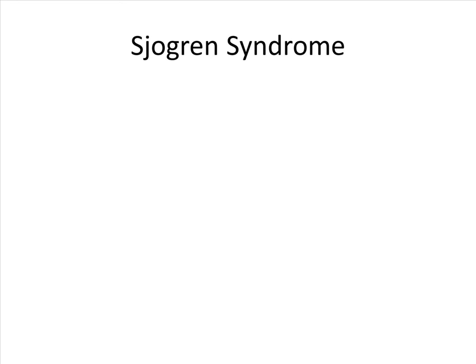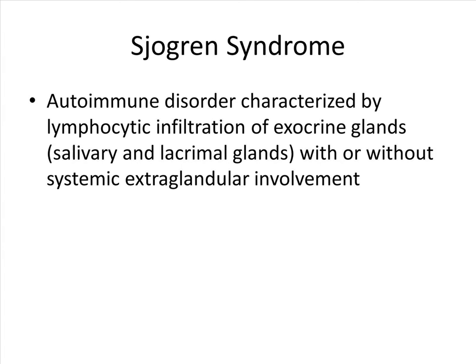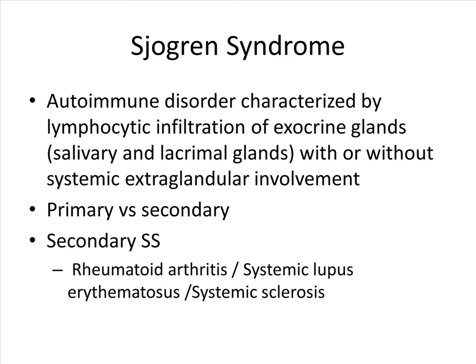Sjogren's syndrome is an autoimmune disorder characterized by lymphocytic infiltration of the exocrine glands, either the salivary glands or lacrimal glands, with or without systemic extra-glandular involvement. It can be primary or secondary. In secondary Sjogren's, it is usually secondary to an autoimmune disease such as rheumatoid arthritis, systemic lupus erythematosus, or systemic sclerosis.